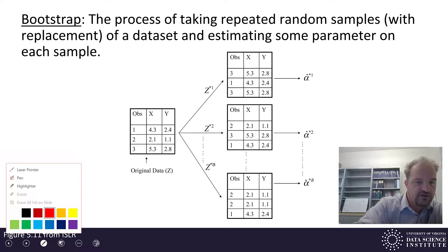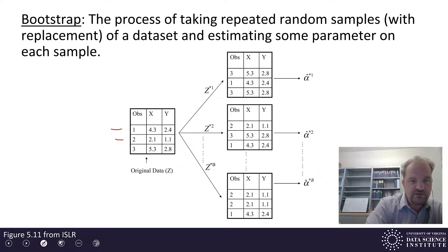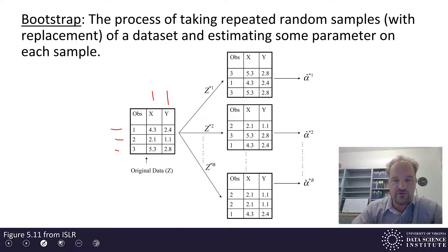Here we have a toy data set with three observations, labels 1, 2, 3, and we have two features, an x feature and a y feature, and this is figure 5.11 from the Isler textbook. And so this is our original data set shown in the box on the left, called z.